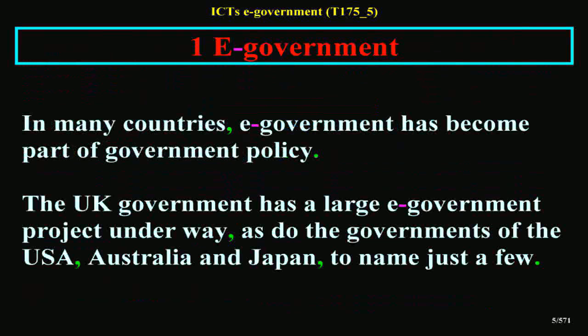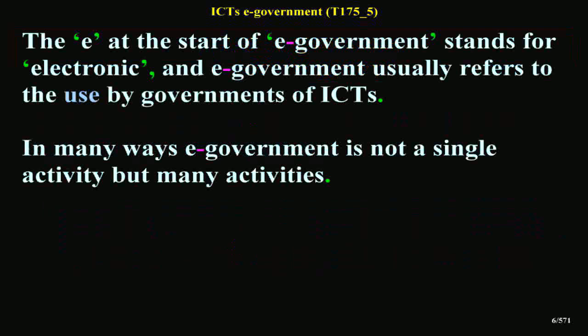In many countries, E-Government has become part of government policy. The UK government has a large E-Government project underway, as do the governments of the USA, Australia and Japan, to name just a few. The 'E' at the start of E-Government stands for electronic, and E-Government usually refers to the use by governments of ICTs. In many ways E-Government is not a single activity but many activities.